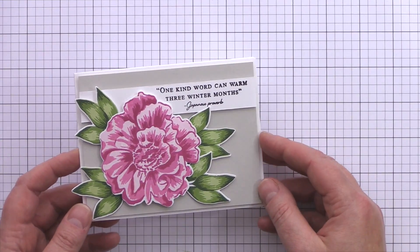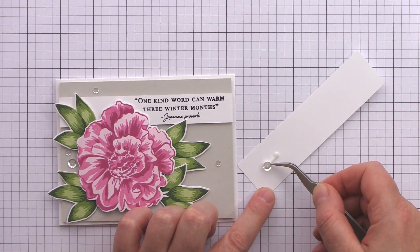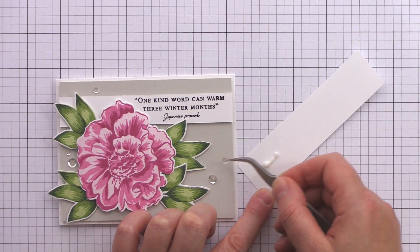I wasn't sure whether to add any sparkle or not but then decided a few clear sequins would add interest without competing with the flower and I adhered those with some Ranger Multi Medium in matte.